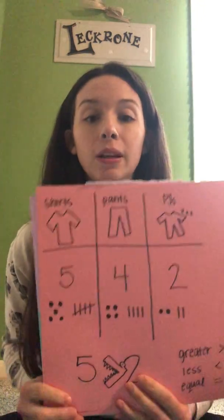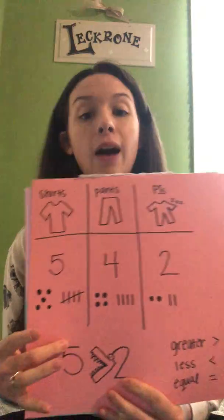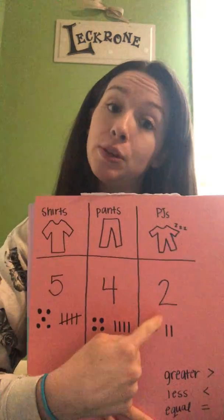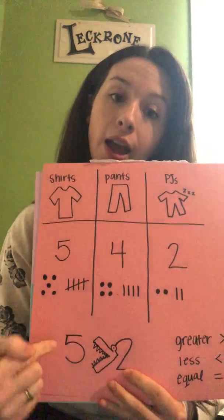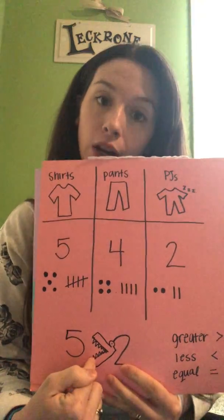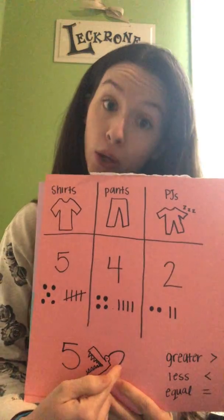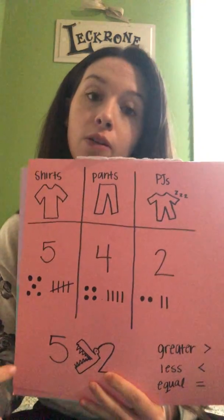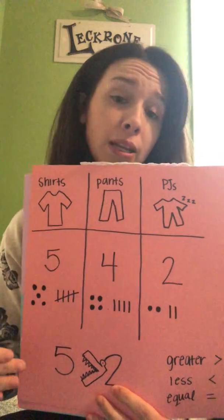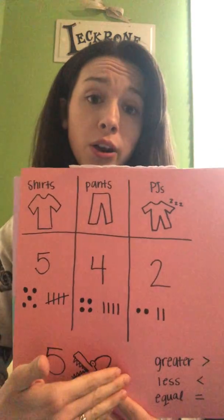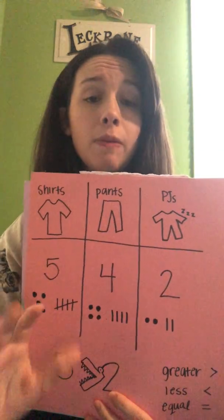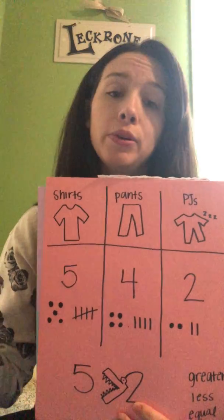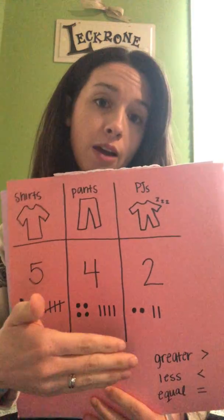That would leave me with five, because that's my biggest number, and two, my smallest number. So five is greater than two. The alligator is eating the five. Now, if I had written two first, the alligator would still eat the five, but he would be flipped around. So it would show that two is less than five.